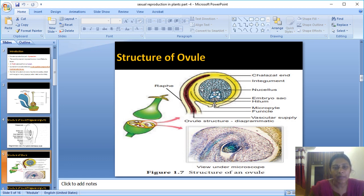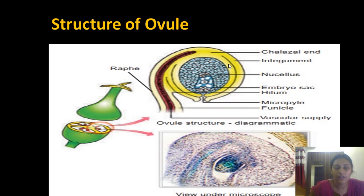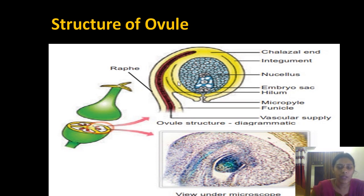In some plant species, the ovule has only one integument layer, which performs a nutritive function for the female gametophyte or embryo sac. This single integument layer is called the integumentary tapetum, or endothelium. Example: the Asteraceae family.